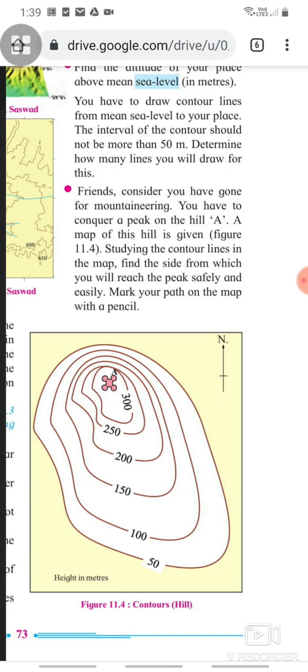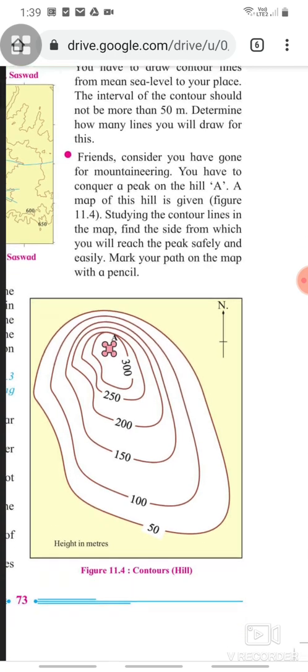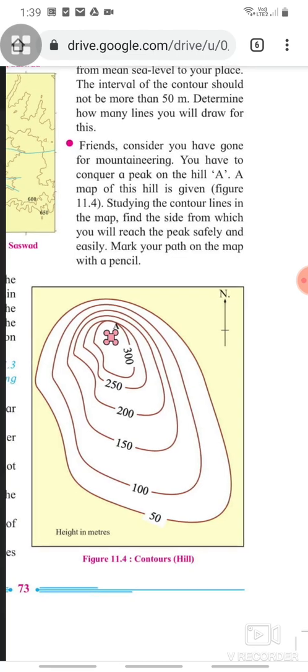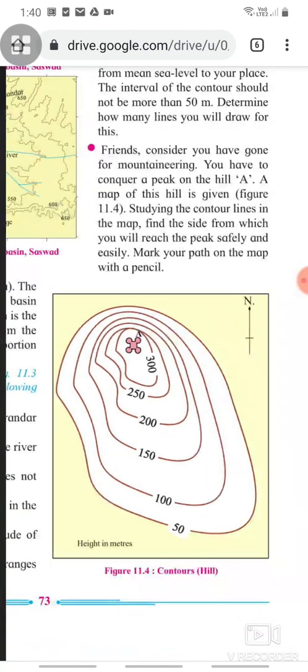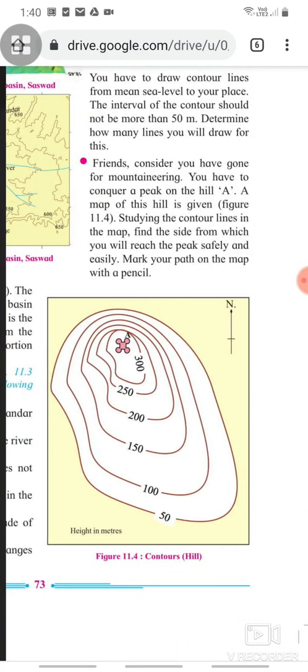Friends, consider you have gone for mountaineering. You have to conquer a peak on hill A. A map of this hill is given in figure 11.4. Studying the contour lines in the map, find the site from which you will reach the peak safely and easily. Mark your path on the map with a pencil.